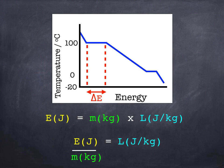And to find the specific latent heat, we just need to use the equation but rearranged. So we do the energy divided by the mass gives us the specific latent heat.